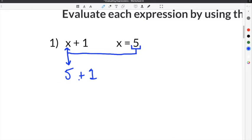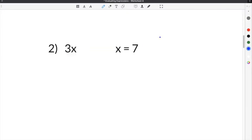All we do after this point is use order of operations to simplify. 5 plus 1 equals 6. After we evaluate this expression, our answer is 6. Problem 2 gives us 3x where x equals 7.